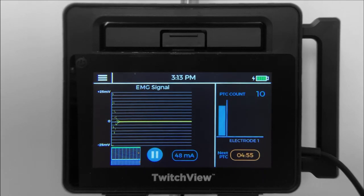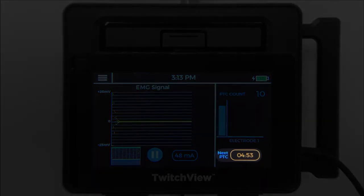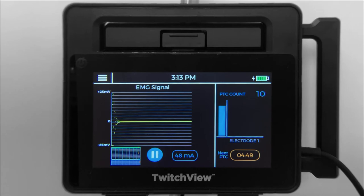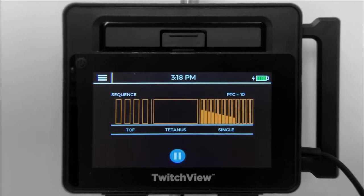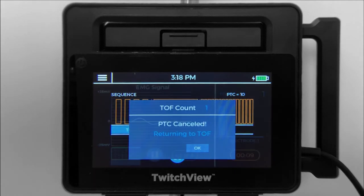Post-TATANIC count mode defaults to 5-minute measurement intervals. When a response to TRAIN-4 is registered, the monitor will automatically transition back into TRAIN-4 mode.